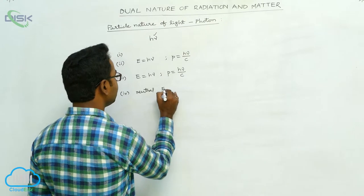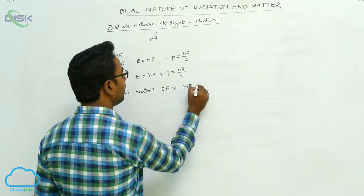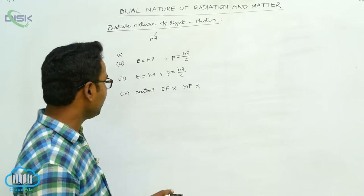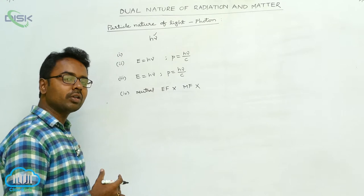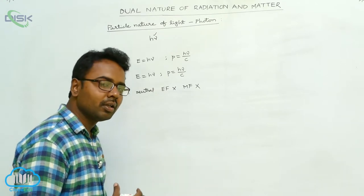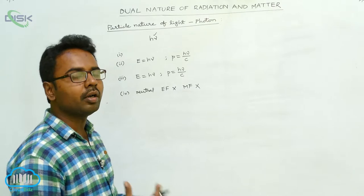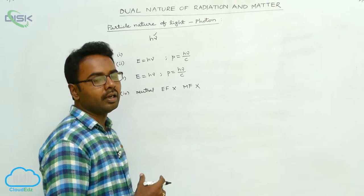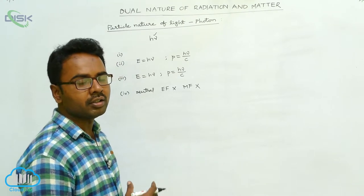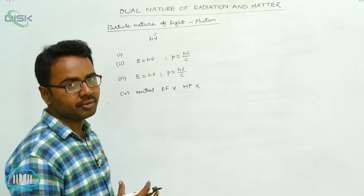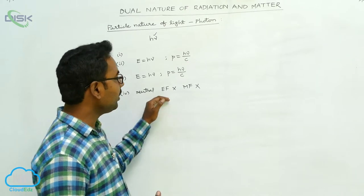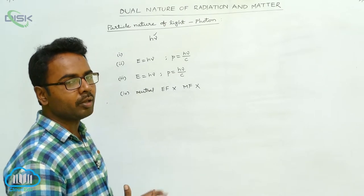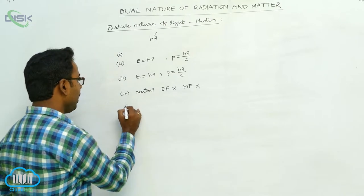Because photons are electrically neutral, they cannot be deflected by either an electric field or a magnetic field. Photons carry neither positive nor negative charge. That is why electromagnetic radiation propagating through an electric or magnetic field cannot be deviated — because it is made up of electrically neutral photons.